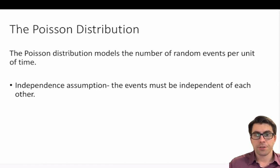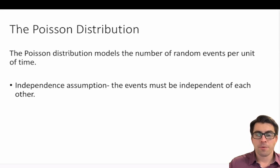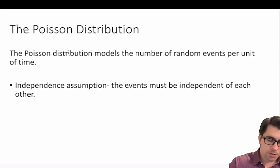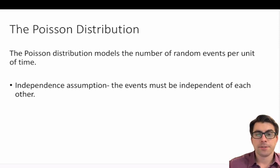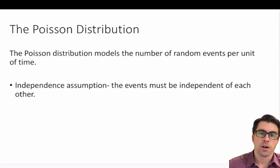Importantly, the Poisson distribution is a discrete probability model, meaning it models discrete events — those which can be counted: one, two, three, four, five, six, seven. This is different from the continuous probability model where values can assume an infinitesimal number of values. Within our Poisson distribution we have an independence assumption: the events must be independent of each other. Knowing one patient arrived at the ER will not impact another arriving, and one car pulling into a drive-through has no impact on another doing so.